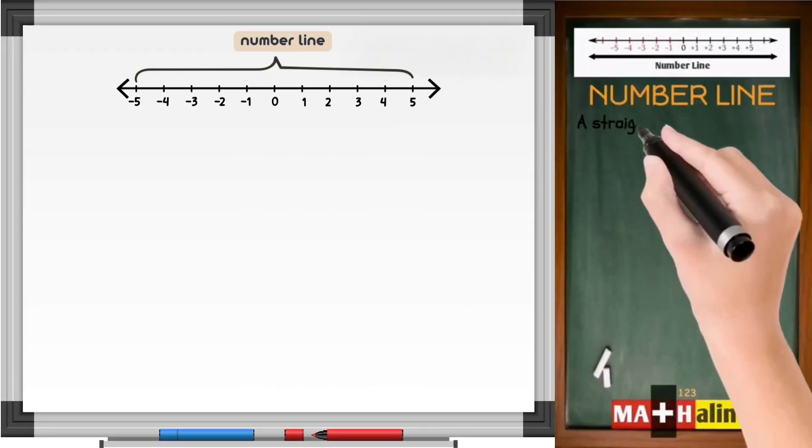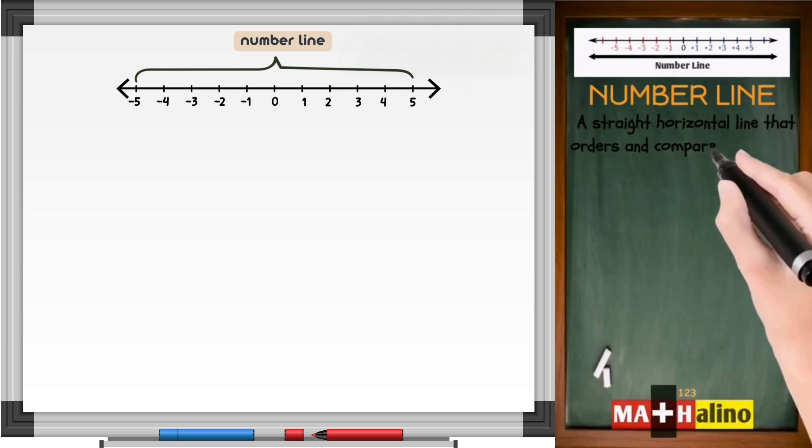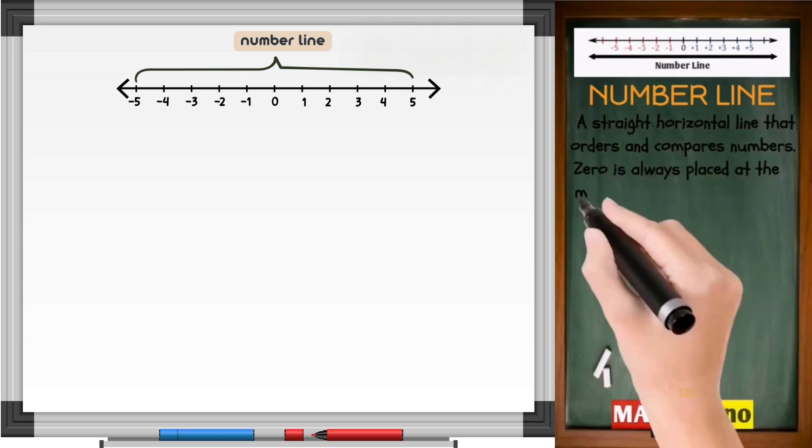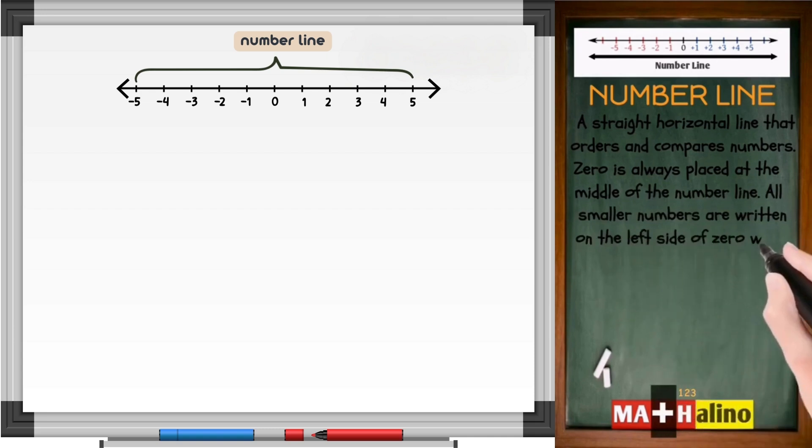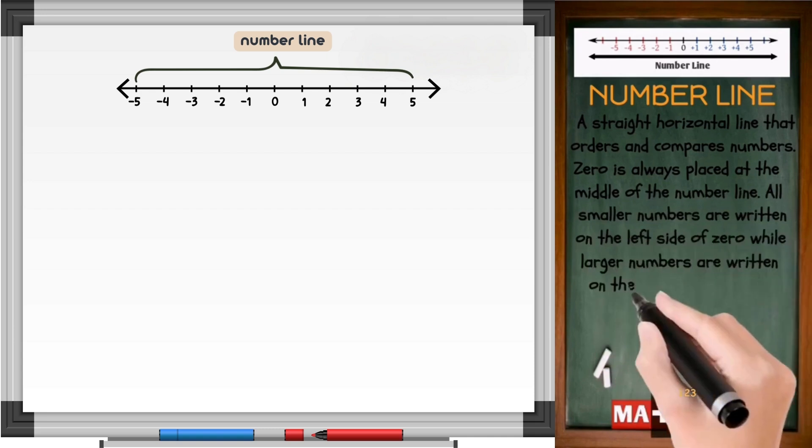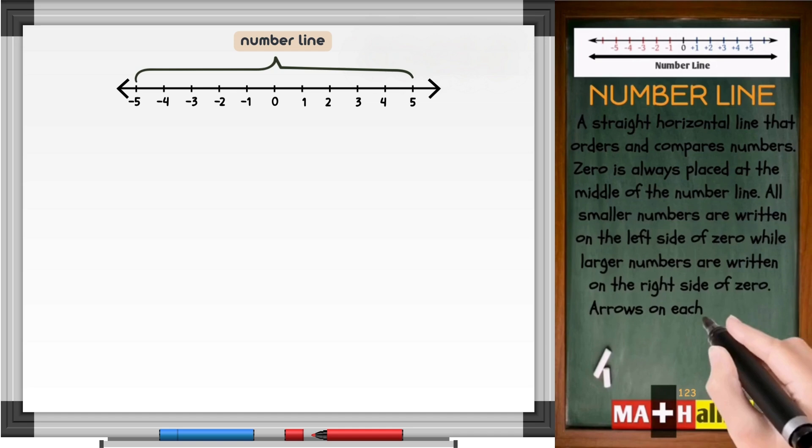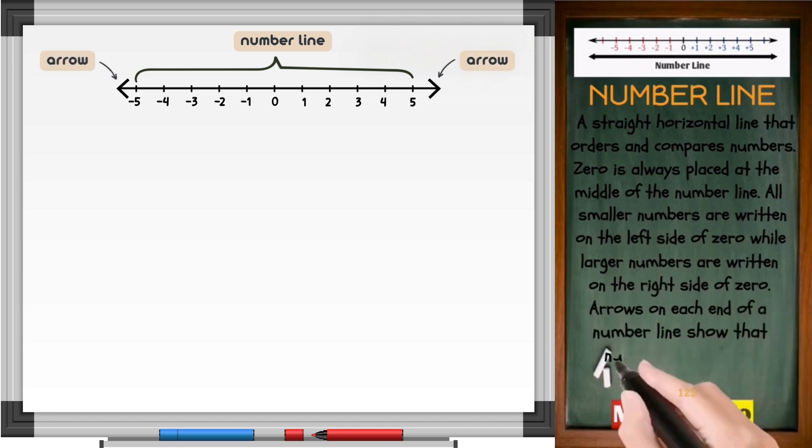Number line. A straight horizontal line that orders and compares numbers. Zero is always placed at the middle of the number line. All smaller numbers are written on the left side of zero, while larger numbers are written on the right side of zero. Arrows on each end of a number line show that numbers keep going.